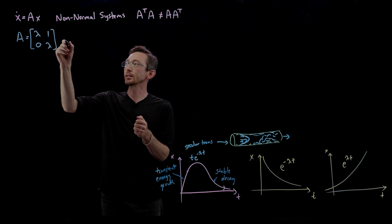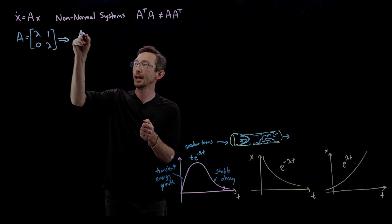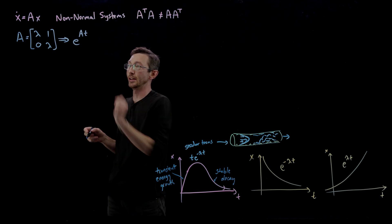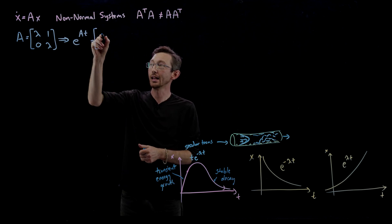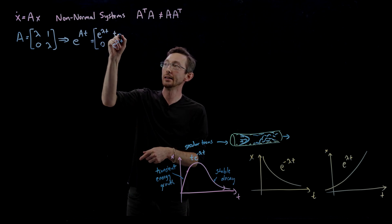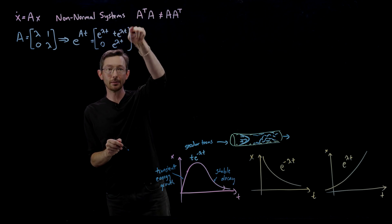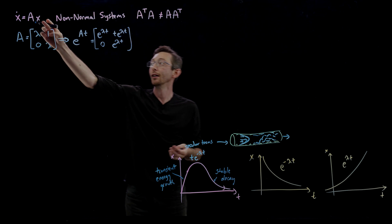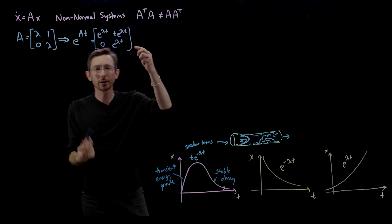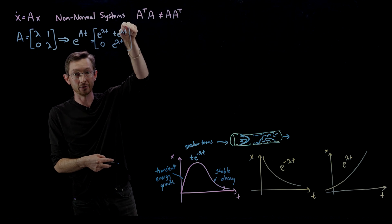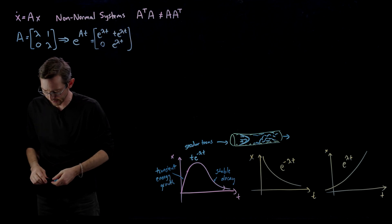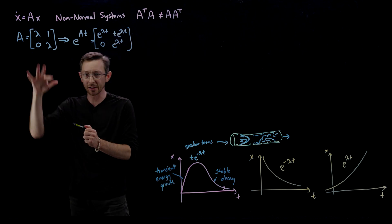Specifically, what we're going to do is compute e^(At), because we know the solution of this system is x(t) = e^(At) · x₀, so we want to compute the matrix exponential. I'm going to claim that this gives e^(λt) on the diagonals, but on the off-diagonal we get a t·e^(λt) term. This off-diagonal secular term means certain parts of my state get amplified in transient growth before eventually becoming stable. These are called secular terms and they're very important.